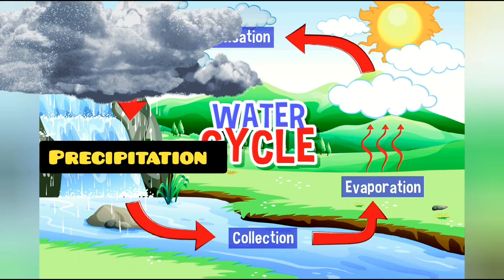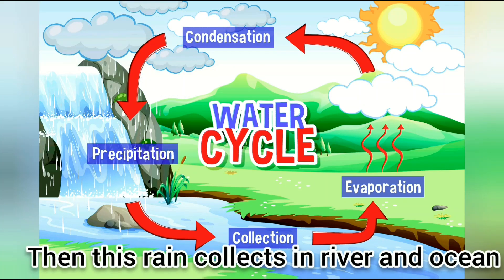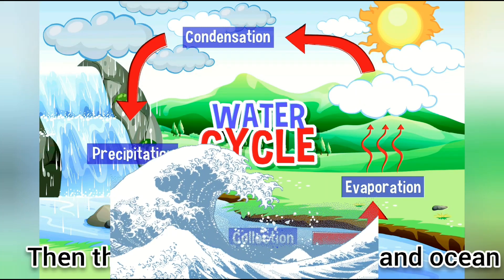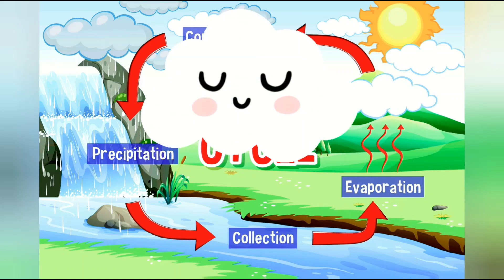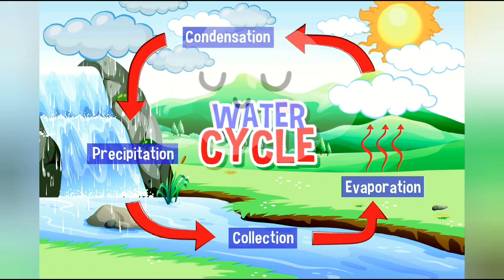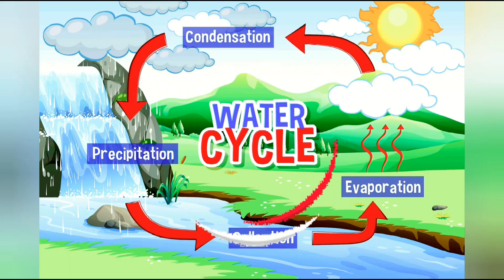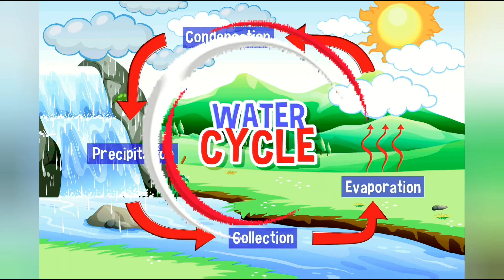Then the rain collects into rivers and then the ocean. Again, this water gets evaporated, condensed, and then precipitates. This cycle goes on and on forever. That is called the water cycle.